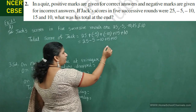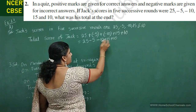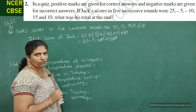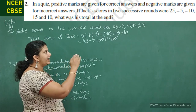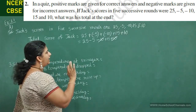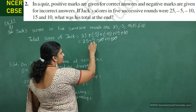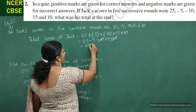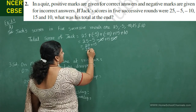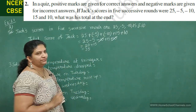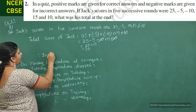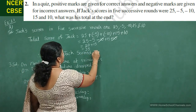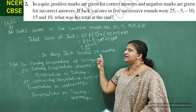Now: 25 minus 5 equals 20, and 20 plus 15 equals 35. Therefore, Jack scored 35 marks in the quiz.